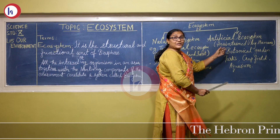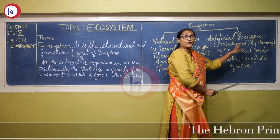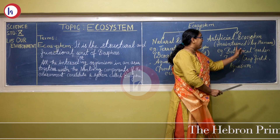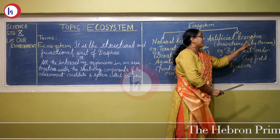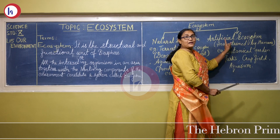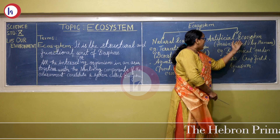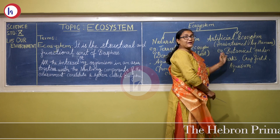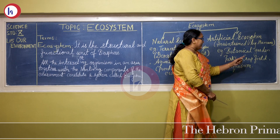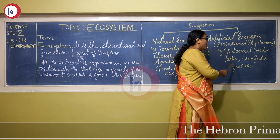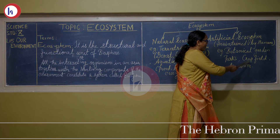The ecosystem which is operated and maintained by human beings is called an artificial ecosystem. Examples of artificial ecosystems include botanical gardens, parks, and crop fields.